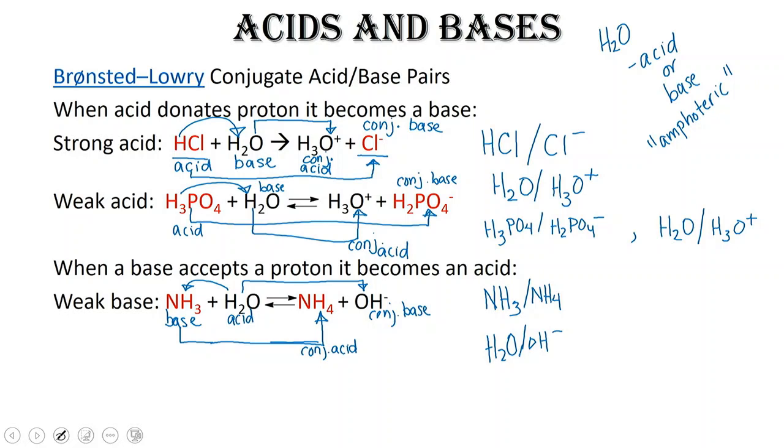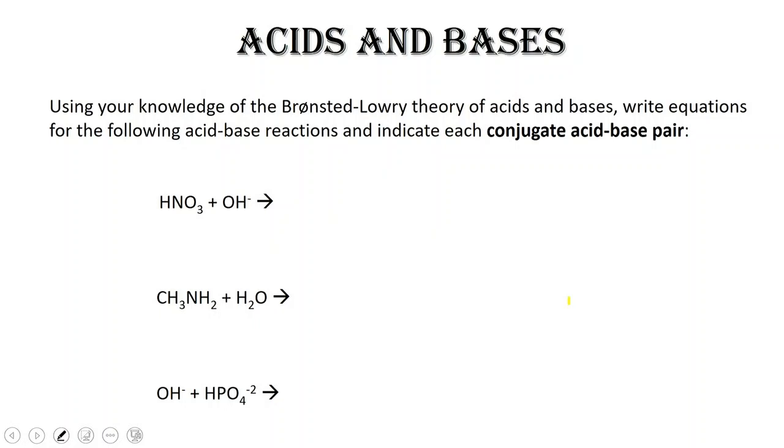What can we say about conjugate acid-base pairs? There's something really important to notice here. Let's look at our HCl and Cl. What's the difference between HCl and Cl? One hydrogen. What's the difference between H₂O and H₃O? One hydrogen. What's the difference between H₃PO₄ and H₂PO₄⁻? One hydrogen. Last look, NH₃ and NH₄, what's the difference between them? One hydrogen. So what's the difference between a conjugate acid-base pair? One hydrogen difference. The one that has the most hydrogens is considered the acid. The one with the fewer hydrogens is the conjugate base. If it's a base, it has fewer hydrogens, and its conjugate acid has one more hydrogen.